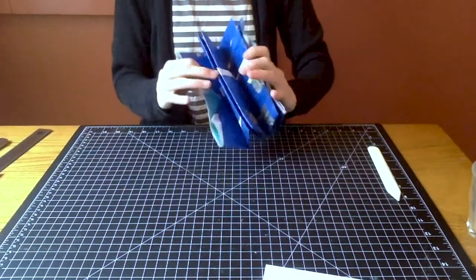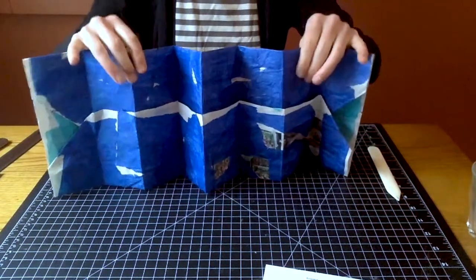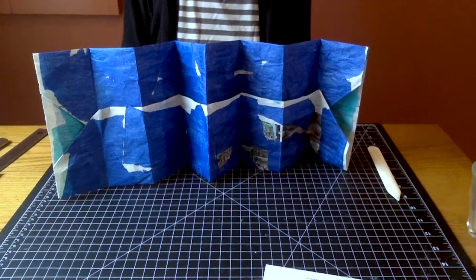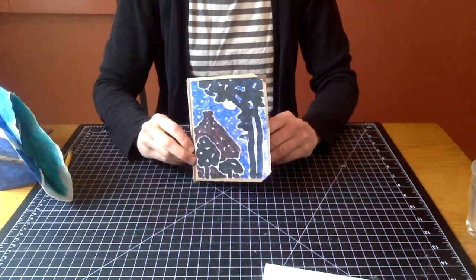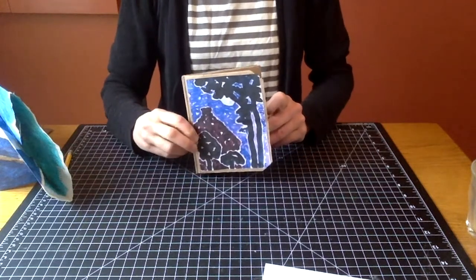And you have made an eight panel accordion book with pockets. Here's another example of an accordion pocketbook that I made using a recycled grocery bag.